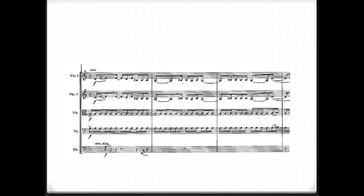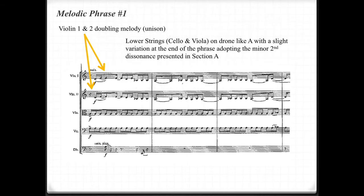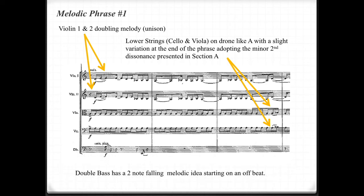Melodic phrase number one. Violin 1 and 2 are doubling the melody, or in unison, thickening the texture. Lower strings — cello and viola — are on a drone-like A, with a slight variation at the end of the phrase, adopting the minor second dissonance presented in section A. The double bass has a two-note falling melodic idea starting on an offbeat. This is interesting because the prominence of the double bass sound when it plays seems to highlight the first beat of the phrase, but it actually starts with a dotted quaver rest — so it's highlighting syncopation.